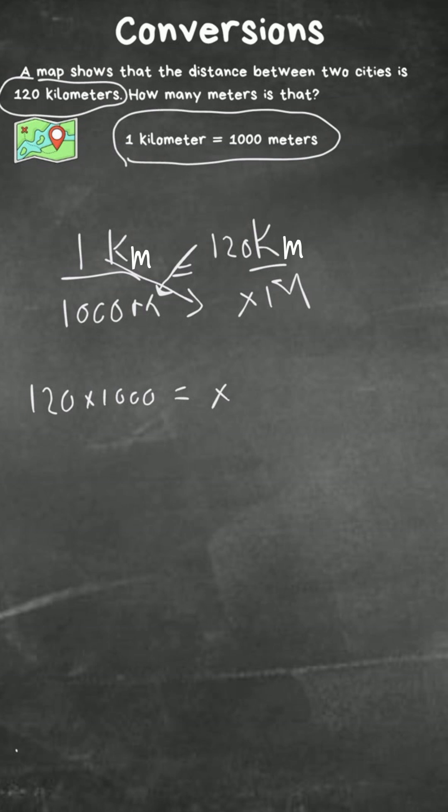So now 120 times 1,000 is 120,000. That's a zero there. And that equals x. So now we can rewrite this fraction in that 120 kilometers equals 120,000 meters.